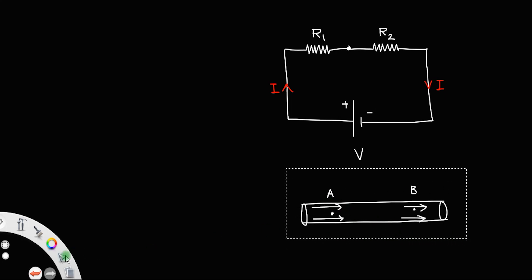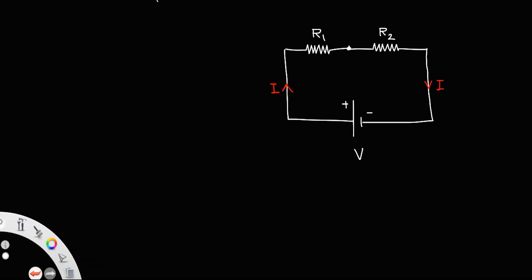Now, we have V1 the voltage drop across R1. Similarly, V2 be the voltage drop across R2.